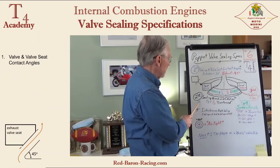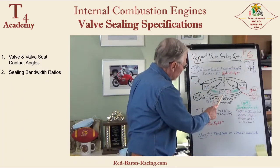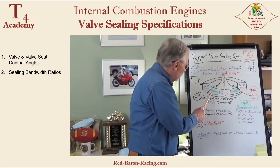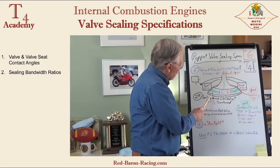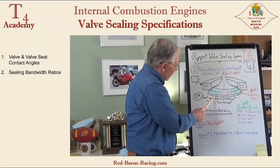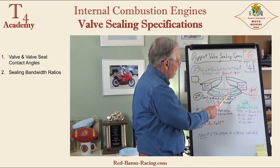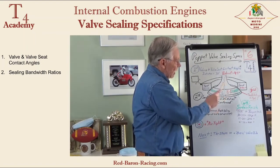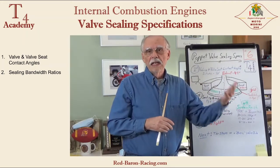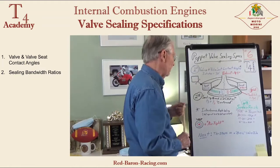The second big item is sealing bandwidth ratio. You have a sealing area on the valve, and the contact area between the seat — which must be machine cut, ground, and lapped into place — should be, on the intake side, at least one-third up to one-half the width of the band machined into the valve. On the exhaust side, the preferred ratio is one-half the width, because there's a lot more heat there. More contact area means a greater heat path to get heat out of that very hot exhaust valve.